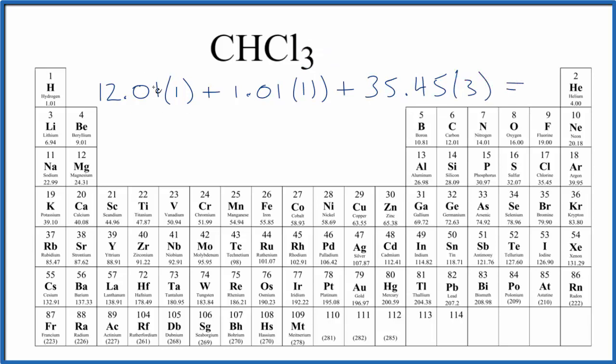So we multiply these together first, then we add the three numbers together. We end up with 119.37, and here are the units, grams per mole.